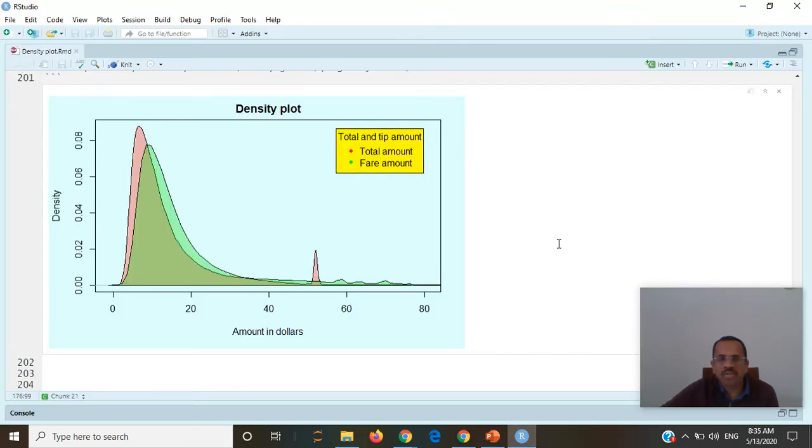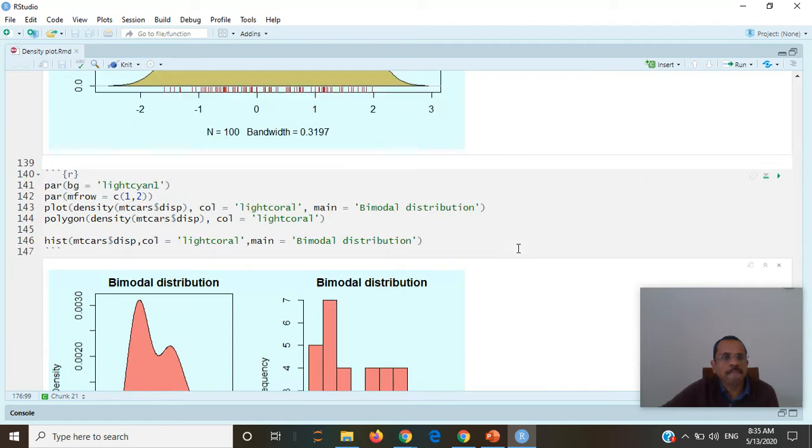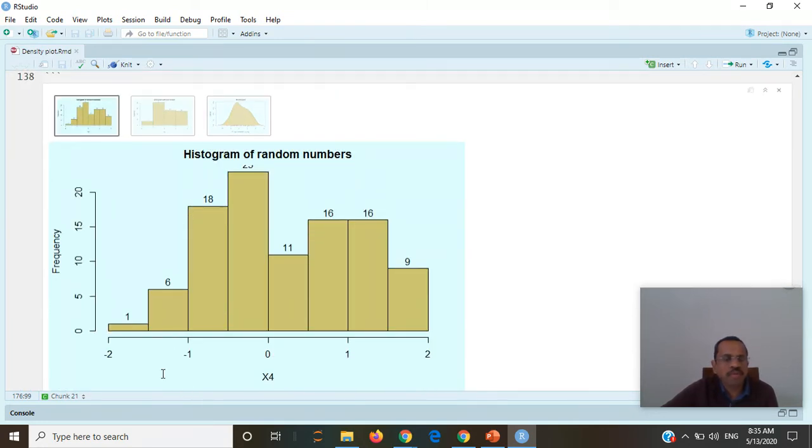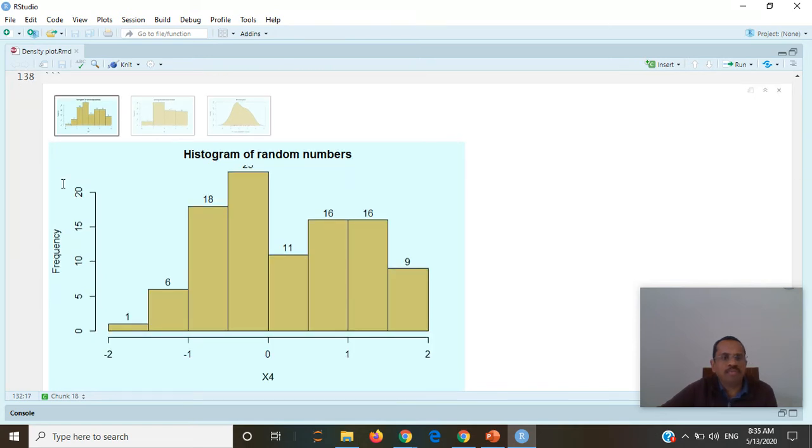We will use RStudio. First I will show some basic histogram. In this case what I have done is I created randomly generated and normally distributed 100 points and created histogram from those points.